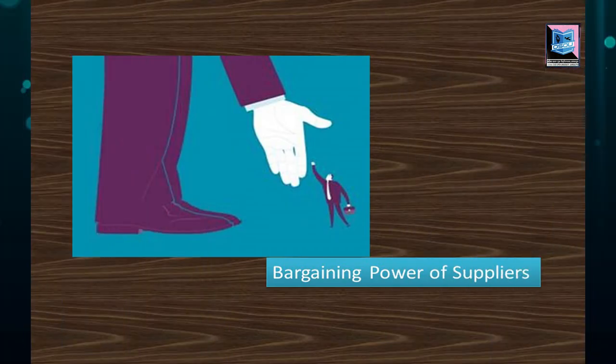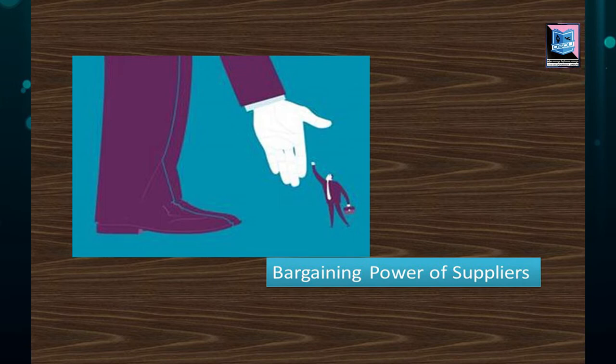Let's come to the bargaining power of the suppliers. When suppliers are few in numbers, they have more bargaining power. So when your business and a number of businesses are dependent on a few suppliers, the bargaining power of those suppliers will be higher. When a supplier is large in size and can supply a huge number of clients, they will also have stronger bargaining power. When a number of suppliers are dealing with similar kinds of products, they will have bargaining power. And if you are unable to change your supplier, the bargaining power will be higher towards the suppliers.